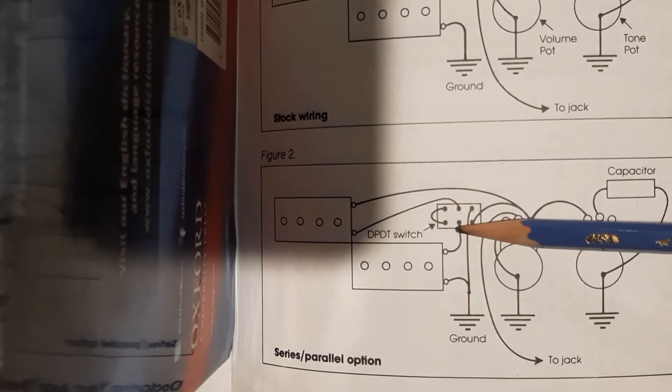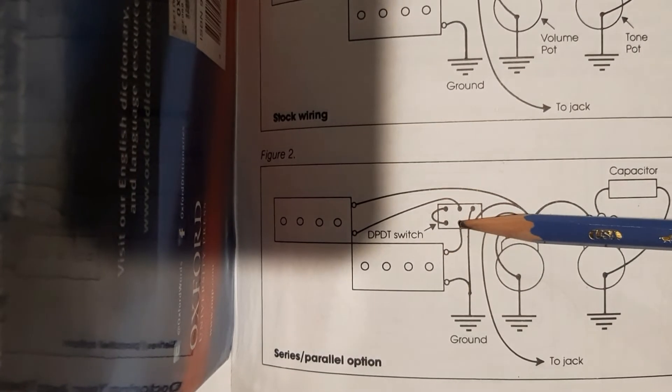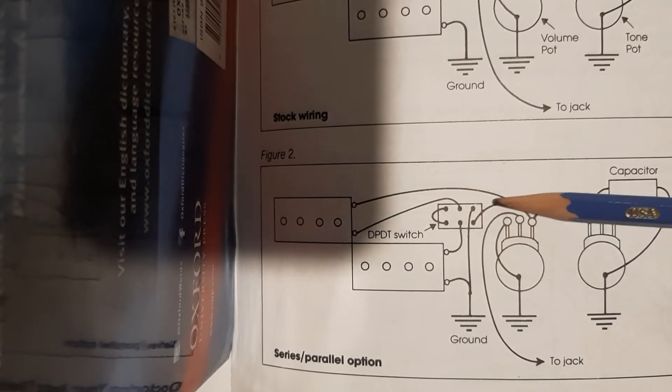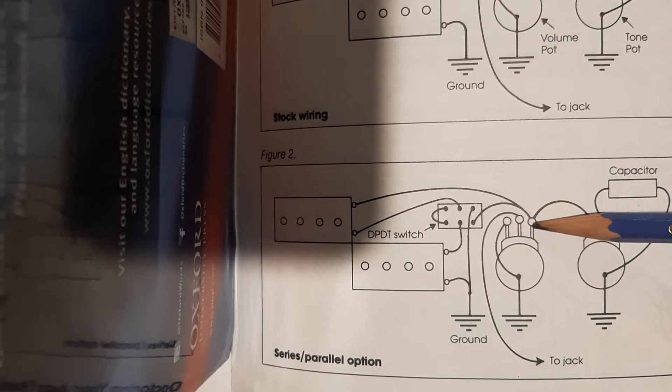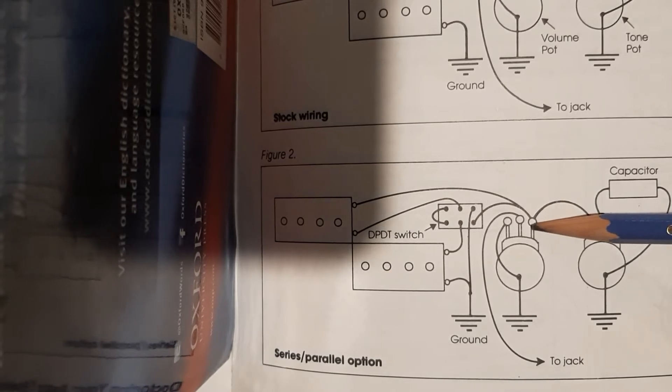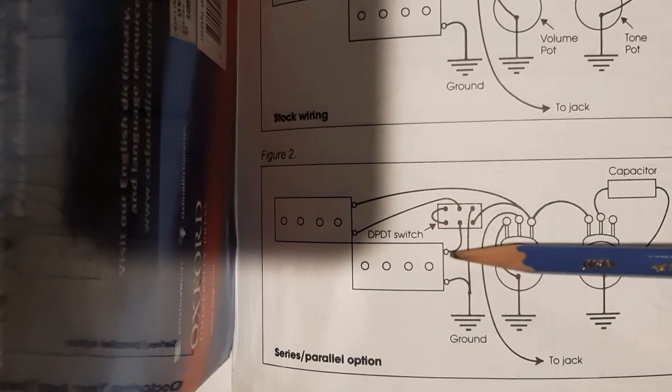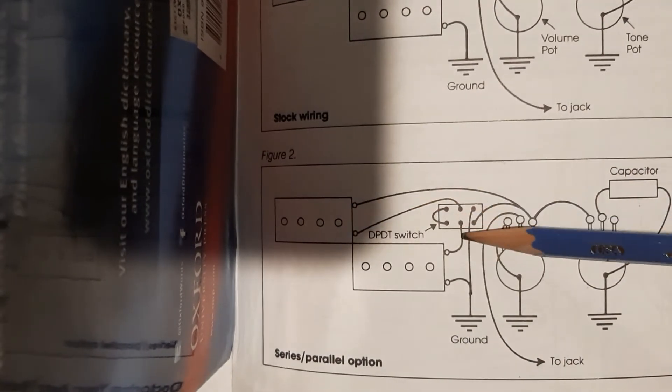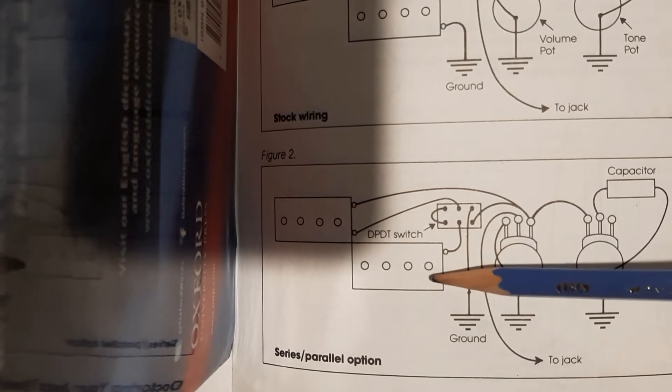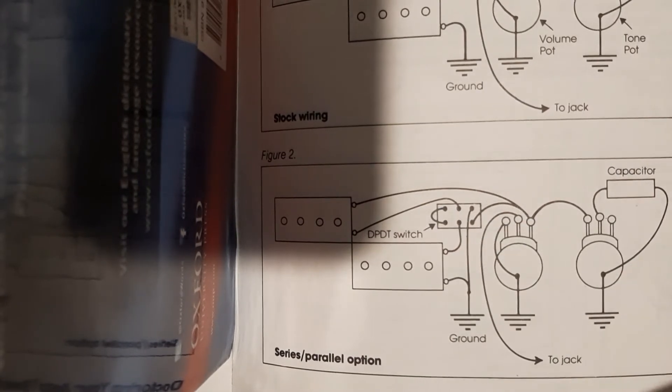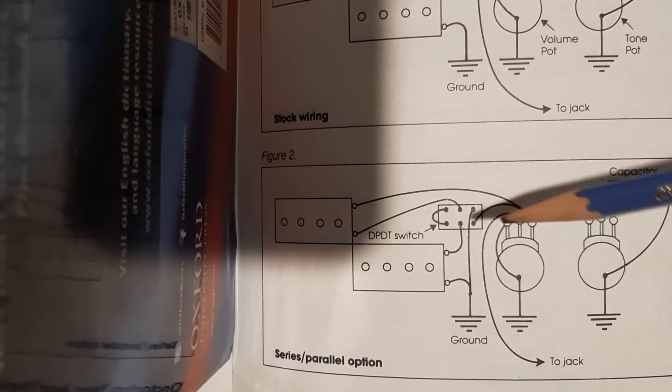And it takes this output of this pickup and it connects it to here and it goes over to the volume lug. Now we are wired in parallel. We're not wired in series anymore, we don't have this pickup going into this pickup. Now we have these two pickups wired separately. That's how this switch works.